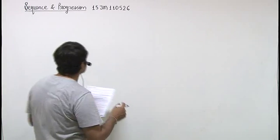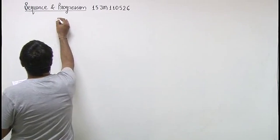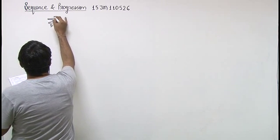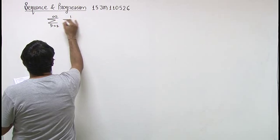In this question, we have to determine the sum represented by r equals 2 to infinity, 1 upon r square minus 1.